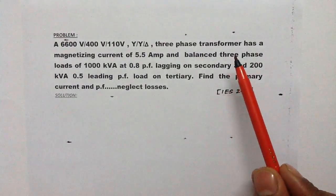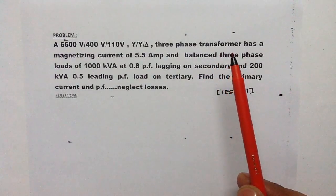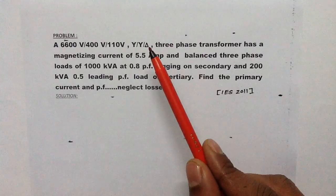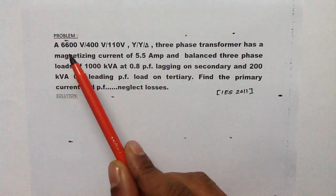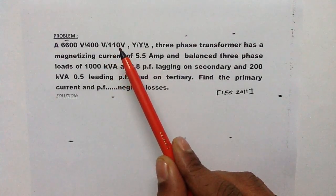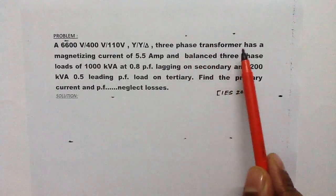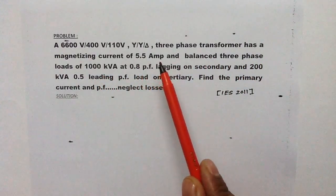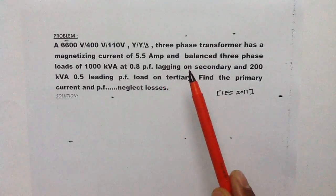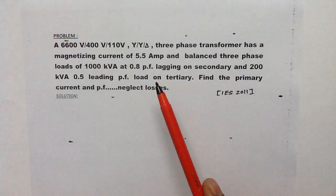There is a three-phase transformer with a primary winding, secondary winding, and a tertiary winding. The primary winding is connected in star, the secondary winding is connected in star, and the tertiary winding is connected in delta. The rated voltage of the primary winding is 6600 V, the secondary is 400 V, and the tertiary is 110 V. The transformer has a magnetizing current of 5.5 ampere, a balanced three-phase load of 1000 kVA at 0.8 power factor lagging on the secondary, and 200 kVA at 0.5 leading power factor on the tertiary.